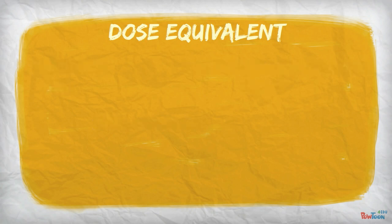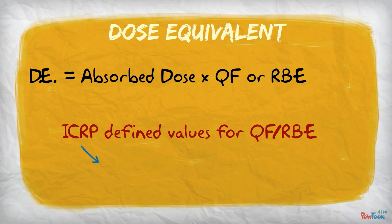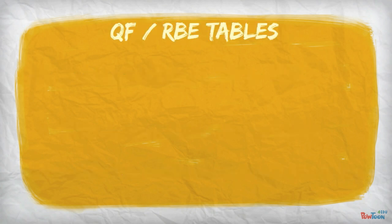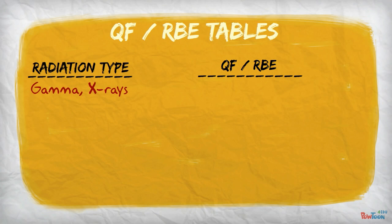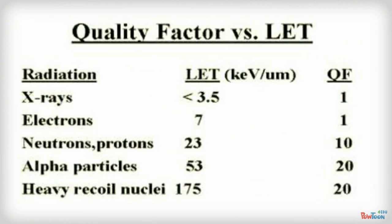In order to calculate the dose equivalent, we take the absorbed dose times the quality factor, or RBE. To simplify the determination of dose equivalent, the ICRP has defined values for QF or RBE, which are accepted to use in nearly all dosimetry applications. Here are those QF values, published by the ICRP. Note the increased RBE as the radiation size increases. This table shows the QF and the LET. As intuition should tell, the QF increases as the LET increases.